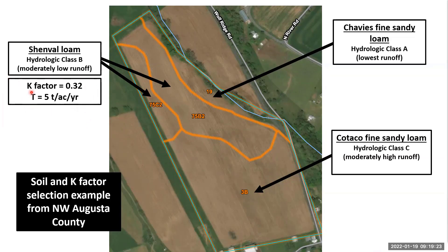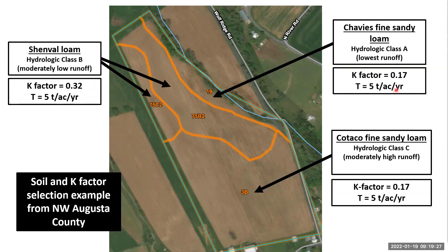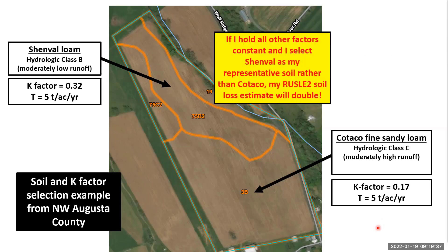The K factor for the Shenval loam is 0.32. For the other two soils (Chavez and Cotico), it's 0.17. What this means is that if you decide half the field is Shenval loam and half is Cotico fine sandy loam and you pick one — if instead of picking Cotico you pick Shenval, your soil loss estimate is going to double. When your K factor doubles, your soil loss is going to double. So it's something you need to keep in mind.